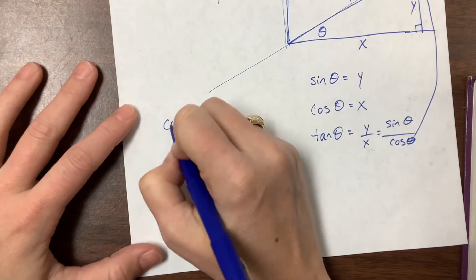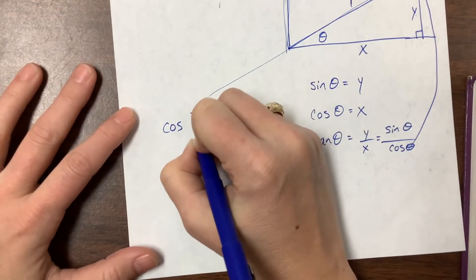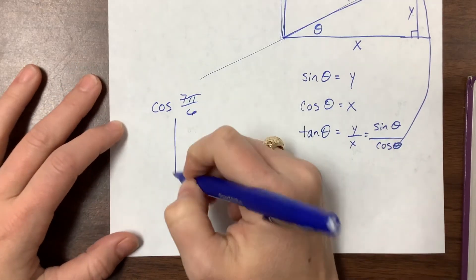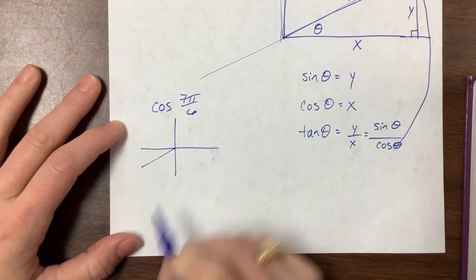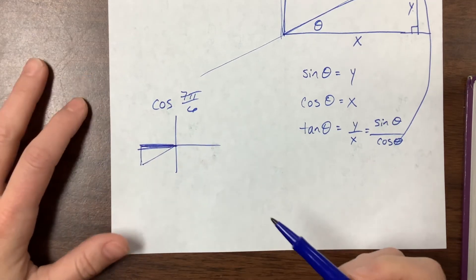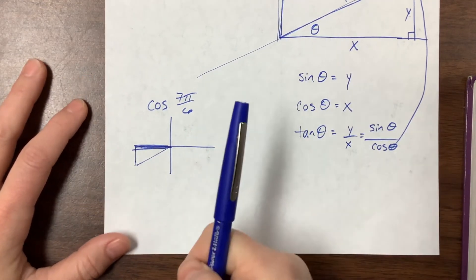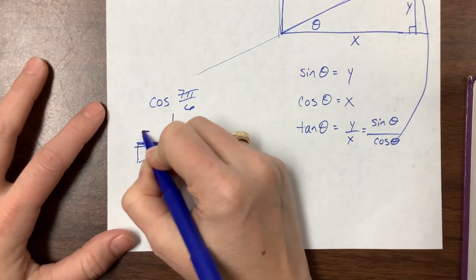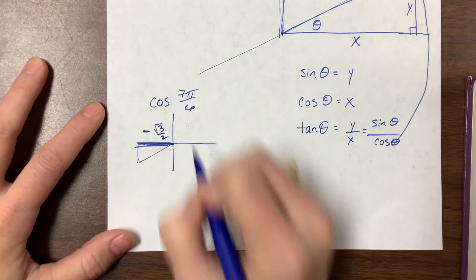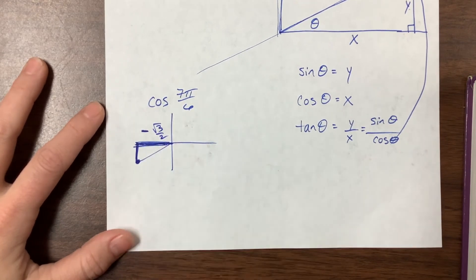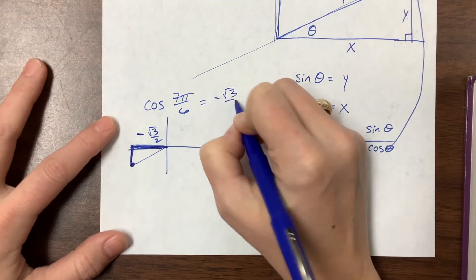Another one: say they give me cosine of 7π/6. What I would picture in my head is I know 7π/6 is here, and cosine is my x value, so I'm looking for this. I always think to myself: did I go farther over or farther down? I went farther over and it's in the negative direction, so it's -root 3 over 2. That's the x value of that coordinate, that's cosine, and I'm done.